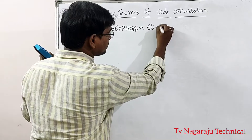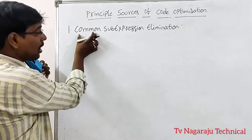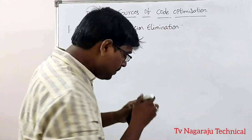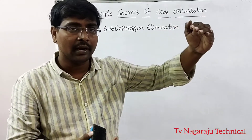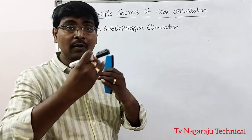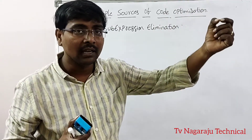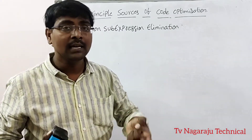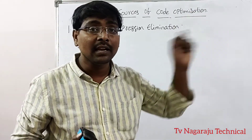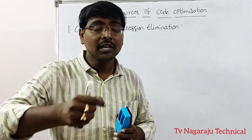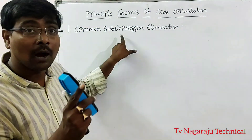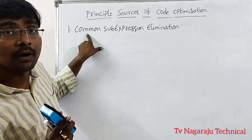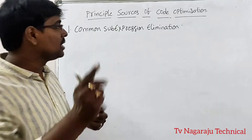Among them, the first one is common sub-expression elimination. The name specifies it: if one expression is calculated and that expression is repeated one more time in the program, instead of recomputing it we simply use the already calculated value. That means elimination of recomputation — if an expression is common, we are eliminating the redundant computation.